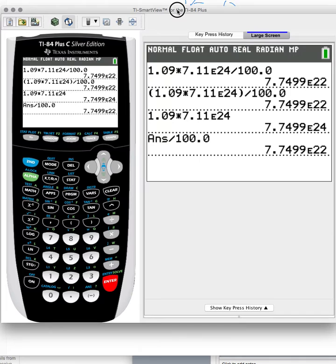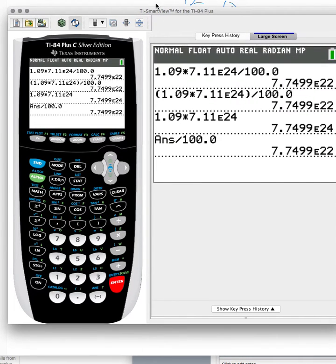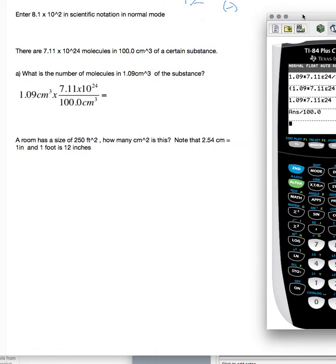Those are some examples of how you might do that sort of math that kind of help you out a little bit. Last one was when we read the room is 250 feet squared, how many square centimeters is this? Note that 2.54 centimeters is 1 inch and 1 foot is 12 inches. So this one's a little harder.